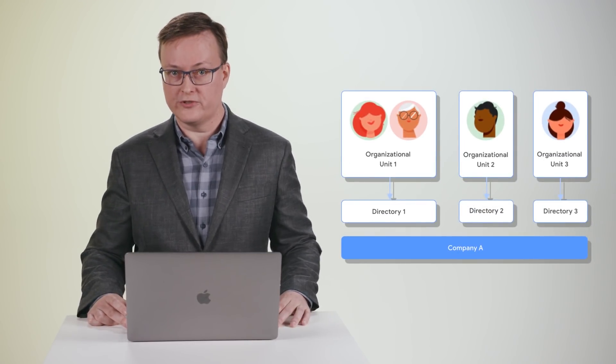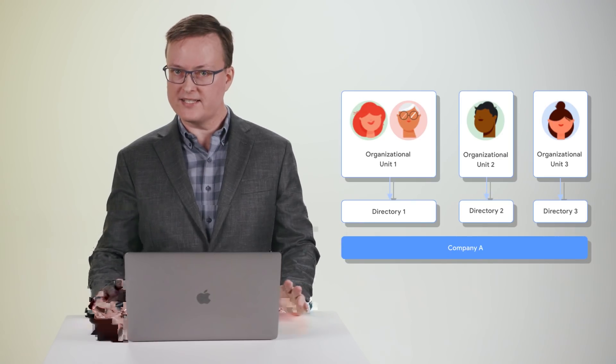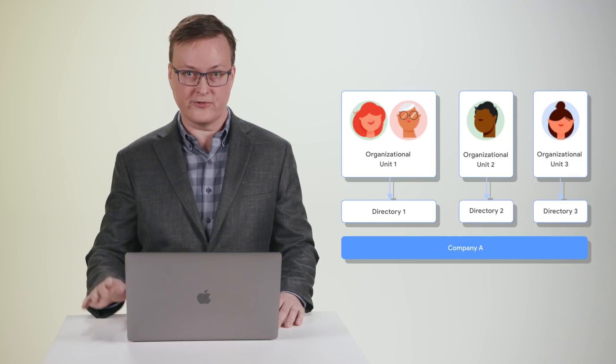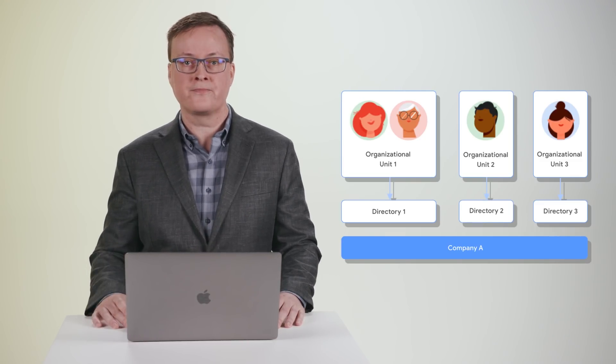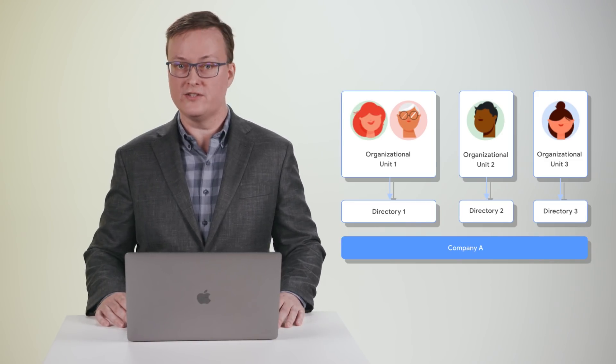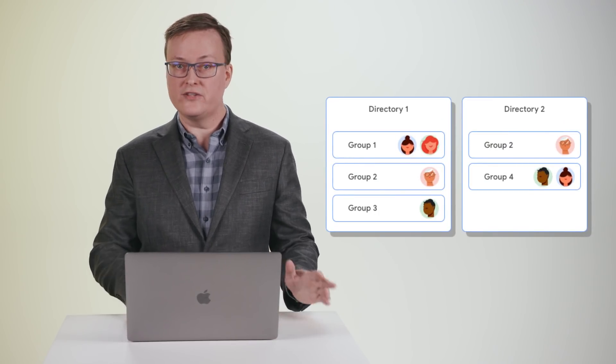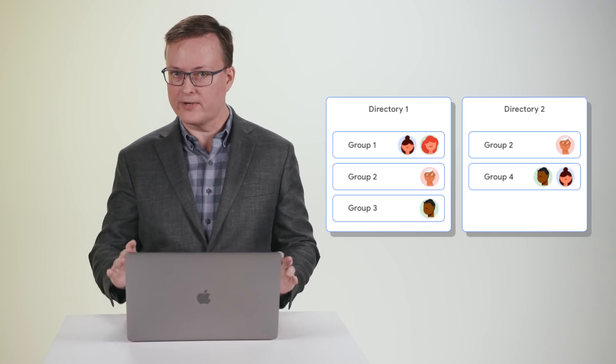You've seen how the G Suite directory and rich profiles promote connection and collaboration between your users. But what if you need different sets of users to have access to directories containing different collections of users? For example, you might want to give full-time employees access to find and see all users in your organization, but at the same time want to limit access of contractors to your organization. It's now possible to create multiple custom directories, each containing a different set of users. You can then assign a custom directory to the different organizational units in your domain. Members of any OU will only be able to see or find users who are in that OU's custom directory. To include users in custom directories, add the users to a Google group and then add that group to each of the relevant directories.